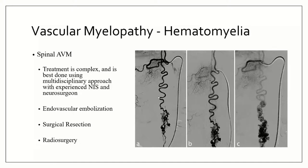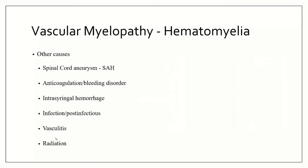Treatment for AVMs is complex. You need a very experienced neurointervention specialist and an experienced vascular neurosurgeon. Options include endovascular embolization, surgical resection, or radiosurgery. The data on all of these is limited. If there's a clear feeder vessel, many go endovascular. If the AVM is very posterior or posterolateral and surgically accessible, many will operate. Radiosurgery requires anatomy that's not too complex. It's a complex case requiring a multidisciplinary approach.